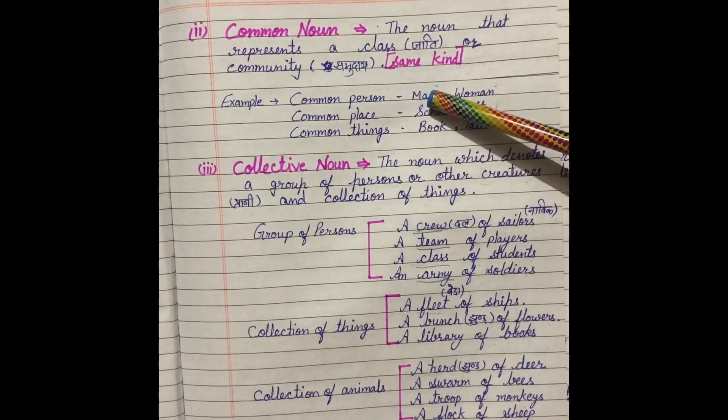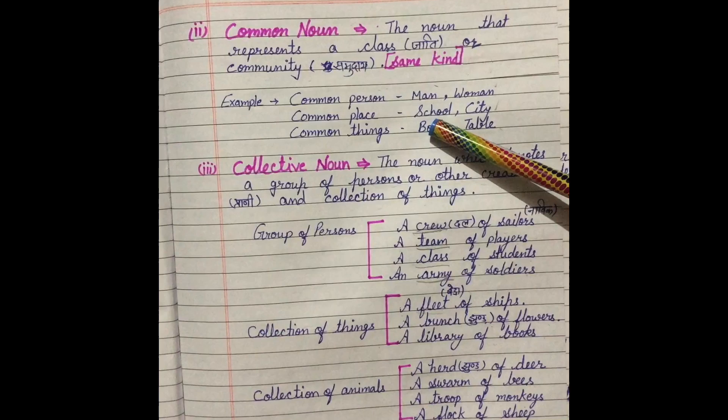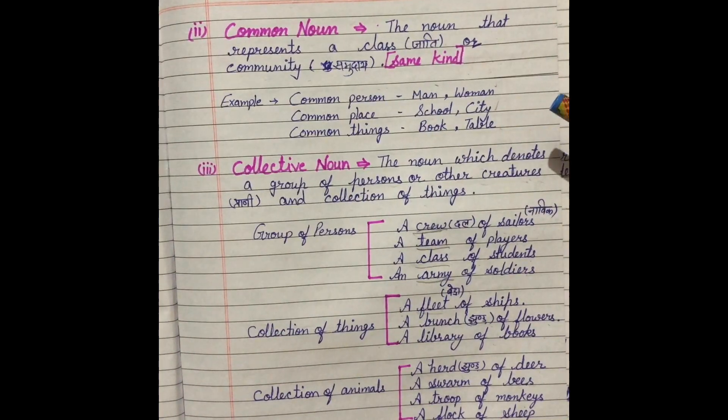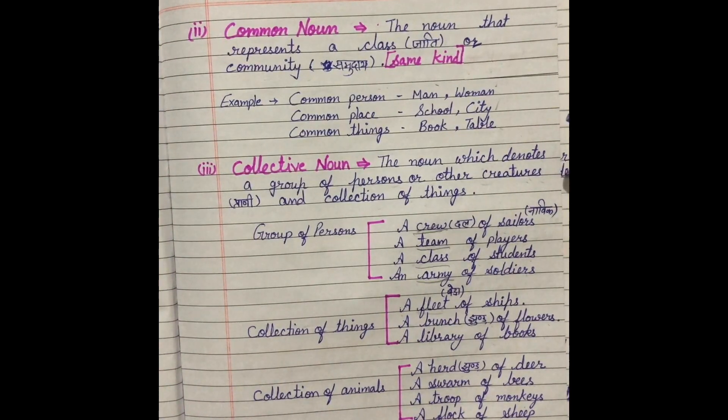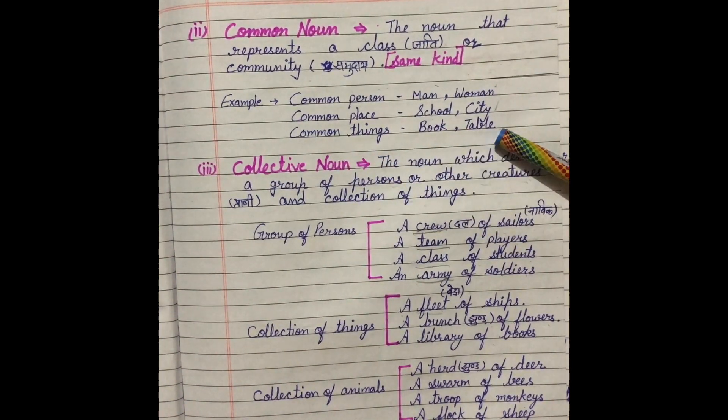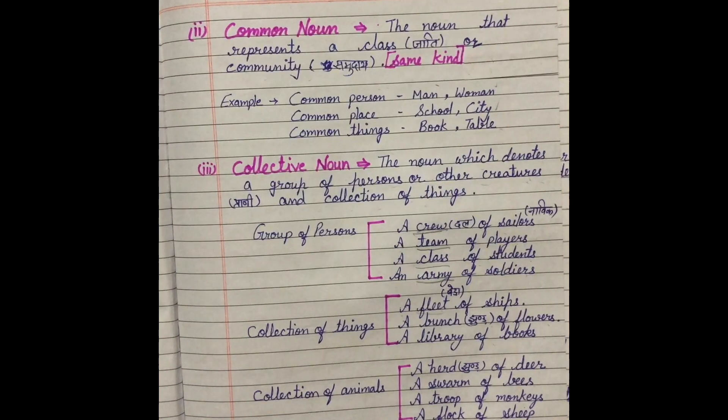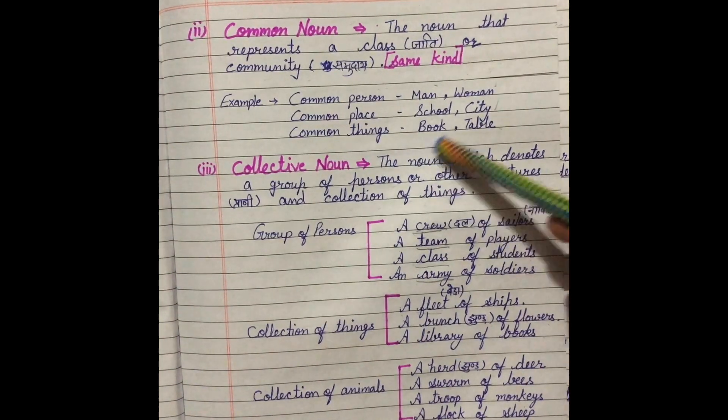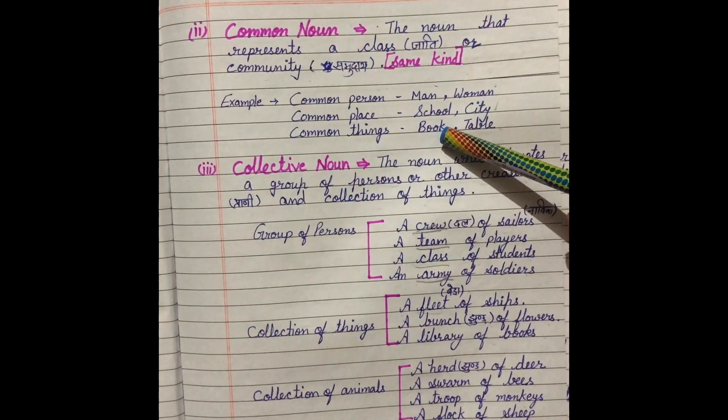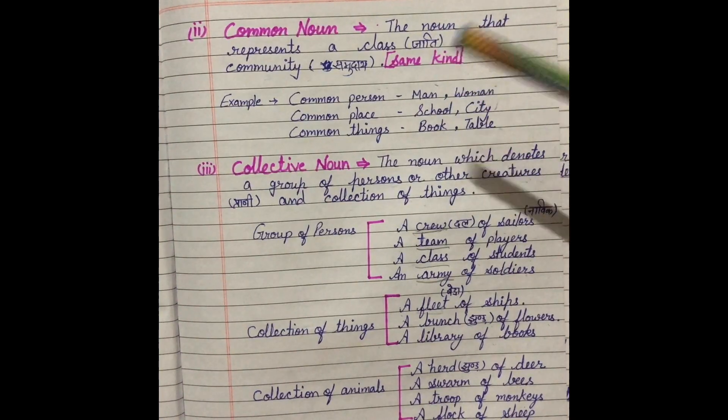Common person like men, women, boy, girls. Common place like school, city. Jitne bhi school hain, jitne bhi city hain, city hi kaha jayega, school hi kaha jayega. Sab ko commonly hum bulaate hain. Common things like book, table. Jo bhi book hogi, hum book hi kahenge, particular name to nahi hoga uska. But when we include particular name of a book, then it is a proper noun. But when we say only book, it means this is a common noun.